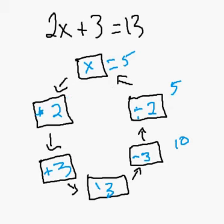And if I wanted to keep going, this loop still works. 5 times 2 is 10. 10 plus 3 is 13. 13 minus 3 is 10. 10 divided by 2 is 5. And we come around full circle.